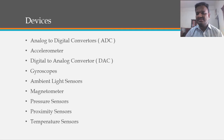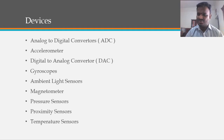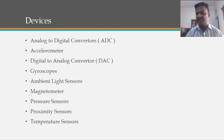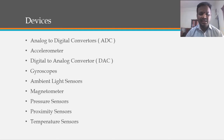Devices supported by IIO include analog-to-digital converters, accelerometers, digital-to-analog converters, gyroscopes, ambient light sensors, magnetometers, pressure sensors, proximity sensors, and temperature sensors. All of these fall under the category of industrial IIO devices.